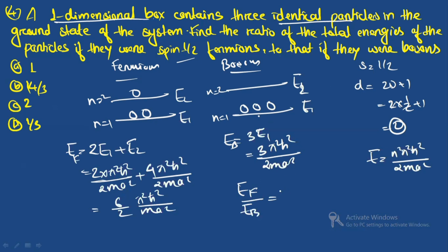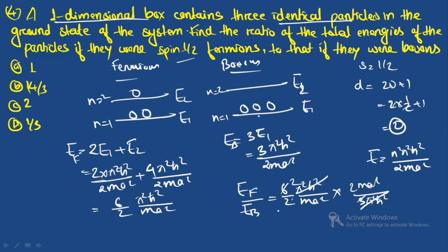The ratio E_fermions/E_bosons = [6π²ℏ²/(2mа²)] / [3π²ℏ²/(2mа²)] = 6/3 = 2. The correct option is option C.